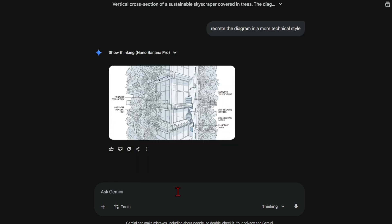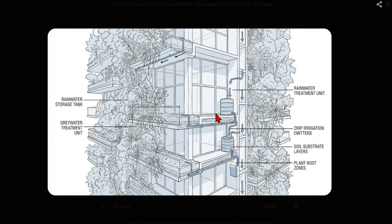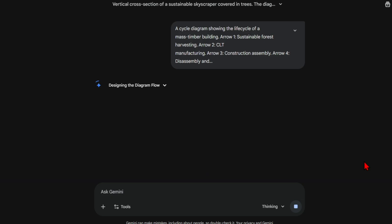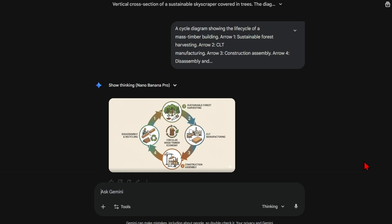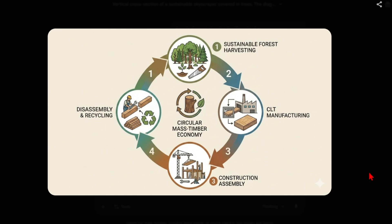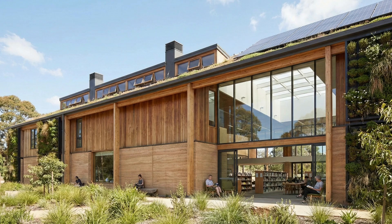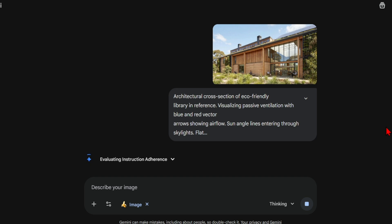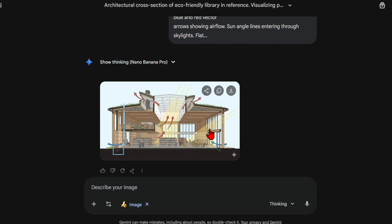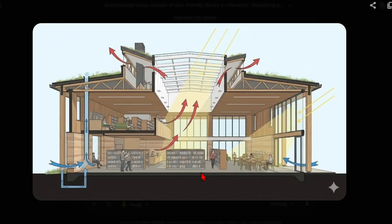Even generic diagrams are very useful for introducing new topics, as they summarize and communicate knowledge in a clear visual way. For example, you could use a cycle diagram to explain circular economy construction. The output is clean, simple, and easily understandable. This technique extends to other system diagrams, like showing how air and light move through a building section. I used an eco-friendly library to visualize passive ventilation, airflow, and sun angles entering through skylights. The result is a high-level diagram with bold arrows — not perfect on details like pipe and rainwater collection, but a solid starting point you can always build on.